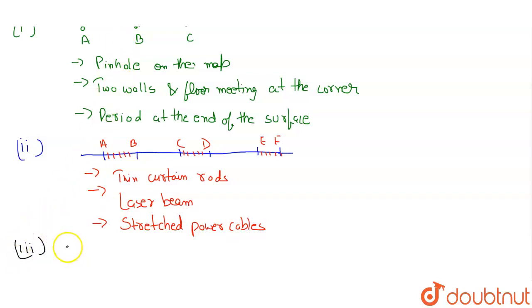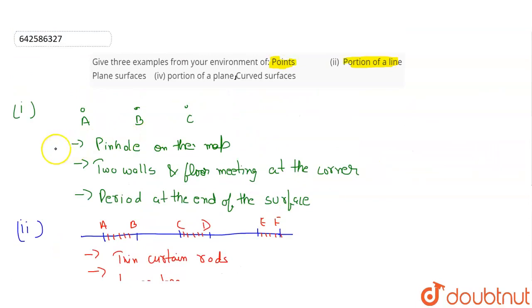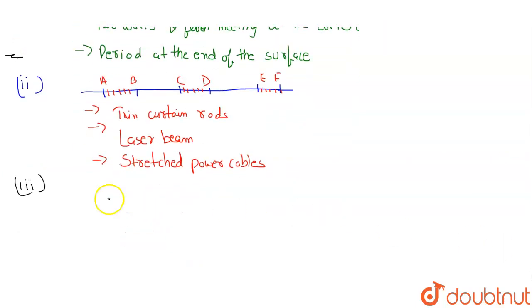Okay, so the third part is what we have. We have to give examples of plane surfaces. This is the portion. You guys can see. Plane surfaces. So what are the plane surfaces? Plane surface can be anything like this is a plane surface. A rectangle. This is a plane surface. A triangle. A plane surface. So what are the examples of these plane surfaces?